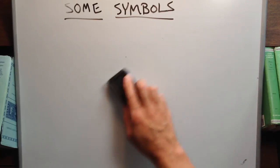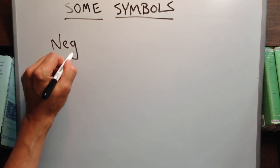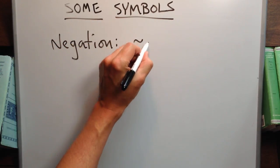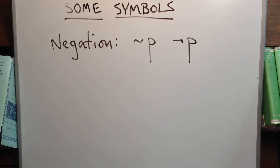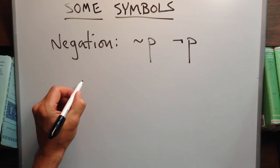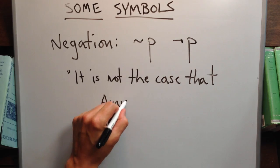There's one more symbol we need to learn, and that is the one for negation. If I want to say it's not the case that something is so, we use one of these two marks.